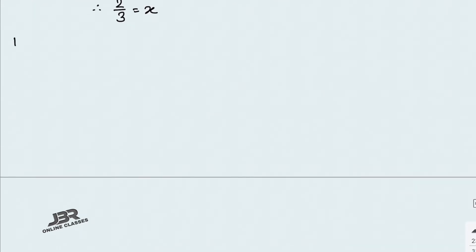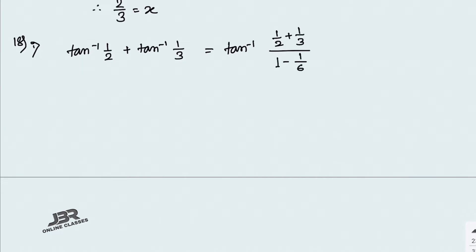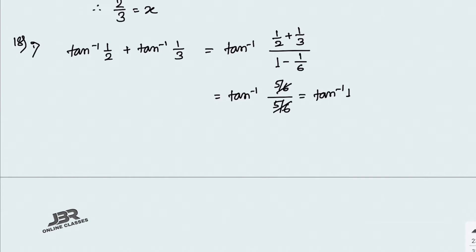Now sum number 18, part 1: find the value of tan⁻¹(1/2) + tan⁻¹(1/3). Using the formula tan⁻¹(x) + tan⁻¹(y) = tan⁻¹((x+y)/(1−xy)), the numerator is 1/2 + 1/3 = 5/6 and the denominator is 1 − (1/2)(1/3) = 1 − 1/6 = 5/6. So it becomes tan⁻¹(1) = π/4. That is your answer.